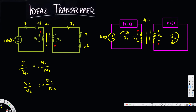Now we can create the equations because we know N1 is 4 and N2 is 1 from the given ratio. From the current equation: I1 equals negative one-quarter times I2. From the voltage equation: V1 equals negative 4 times V2.